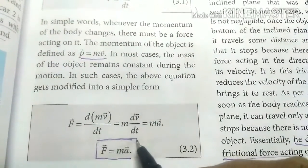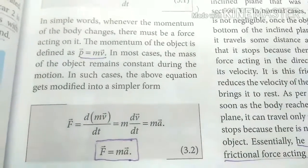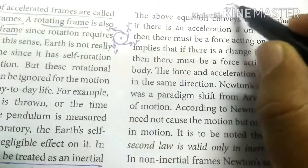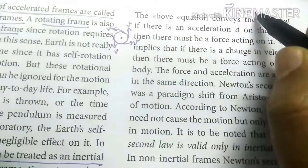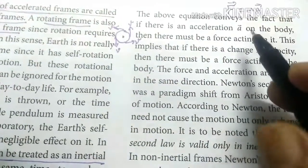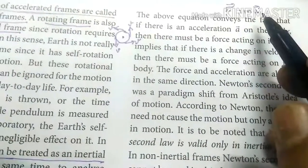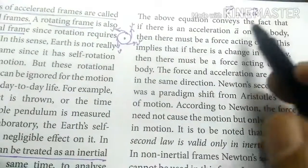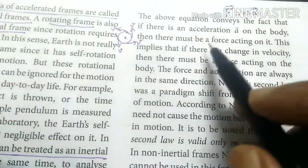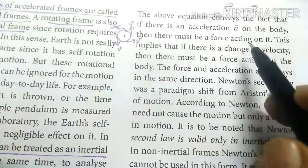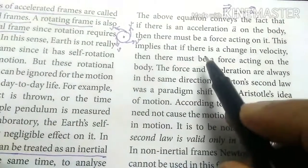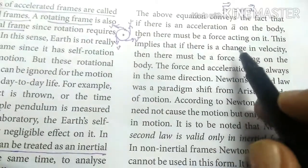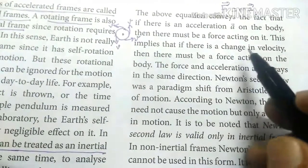From Newton's second law, F is equal to MA. That is a very important relation. So F equals MA. If there is an acceleration on the body, there must be a force acting on it. If our body accelerates, that means a force is acting on it. If there is a force acting on it, then there is a change in velocity.